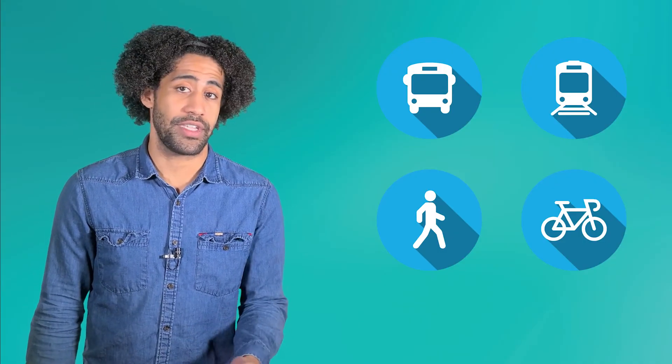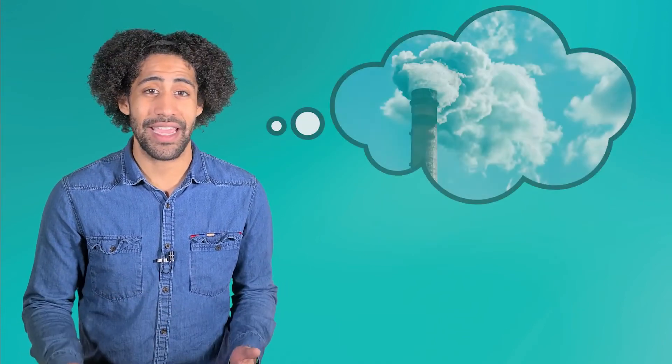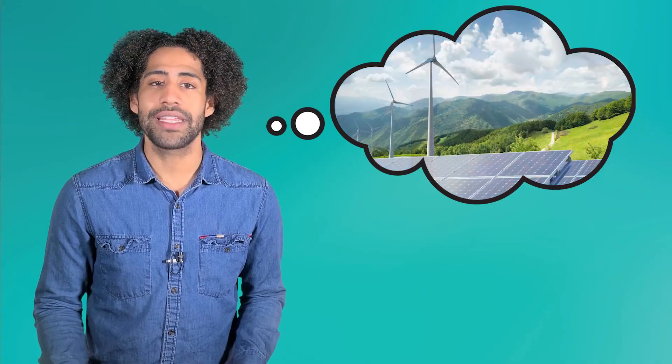You can also try to use public transportation, walk or bike to get places, and encourage your friends and family to do the same. When more people get around in these ways, there are fewer cars on the road, which means less air pollution. And just by understanding air pollution, you've already taken an important step towards preventing it.